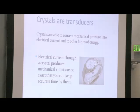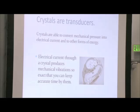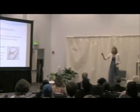Crystals are transducers. What is a transducer? A transducer is able to change one form of energy into another form of energy. So crystals are able to convert mechanical pressure into electrical current and other forms of energy. Many of you may know that all you have to do is hold a crystal, and the pressure of your thumb and forefinger is enough to create an electrical current that flows through that crystal. But it works the same way backwards: if you put an electrical current through a quartz crystal, you produce tiny, very specific vibrations that are so exact that you can keep accurate time by it.